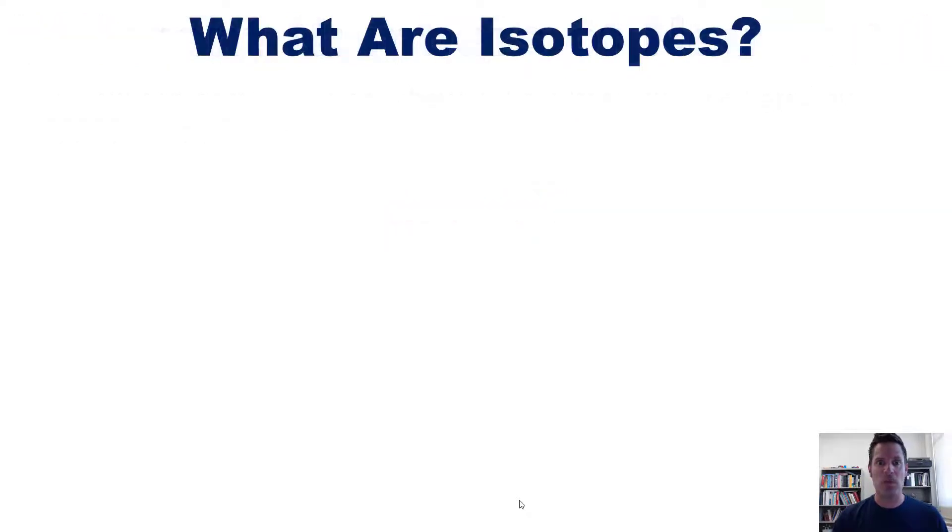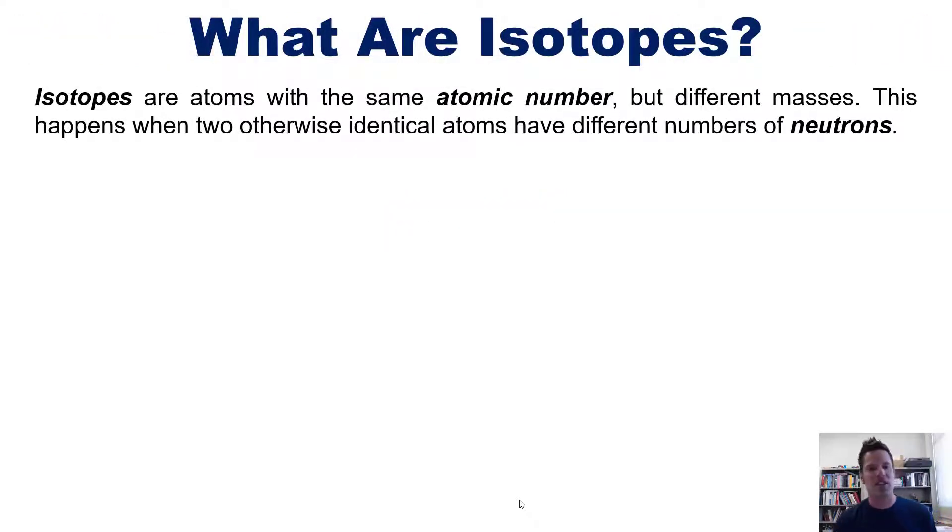And what are isotopes? Well, isotopes are atoms that have the same atomic number but different masses. This happens when two otherwise identical atoms of the same element have different numbers of neutrons. So remember, protons do not change across different atoms of the same element, but their number of neutrons can.